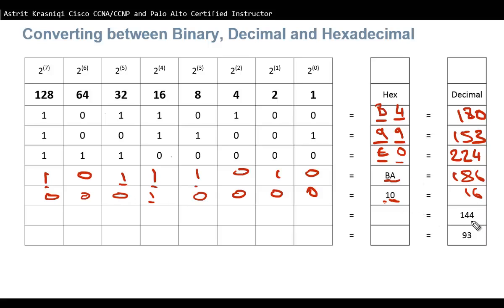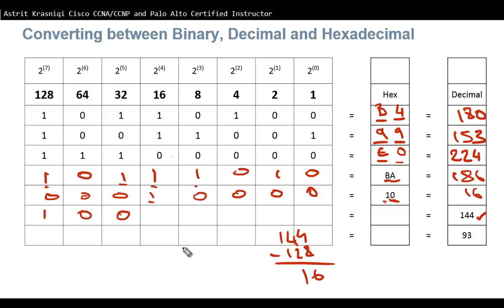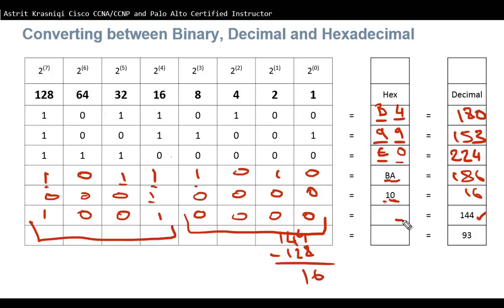Now converting decimal to binary and then hexadecimal. For 144: the leftmost bit position is 128, which is smaller than 144, so we put 1. Subtracting 128 leaves 16. 64 is bigger so 0, 32 is bigger so 0, 16 equals 16 so put 1, then all zeros. The binary is 10010000. To convert to hex, split into two groups: the right is 0, the left is 8 plus 1 is 9. So 144 is 90 in hexadecimal.